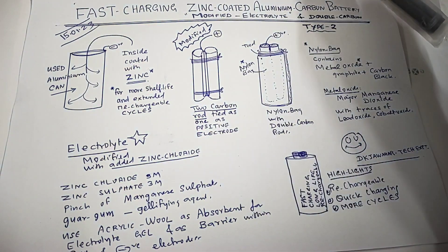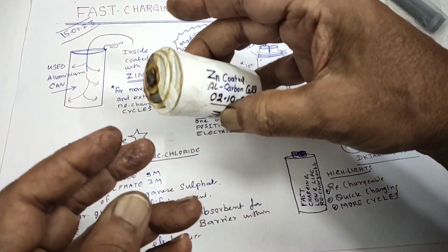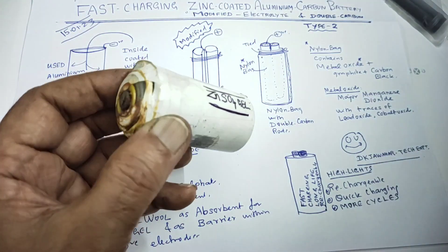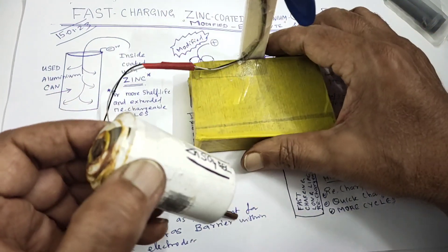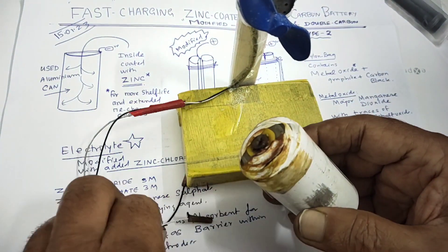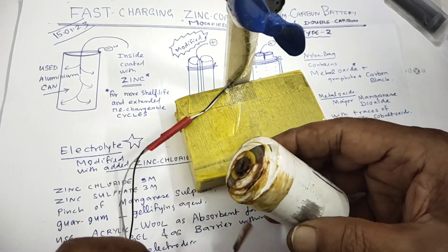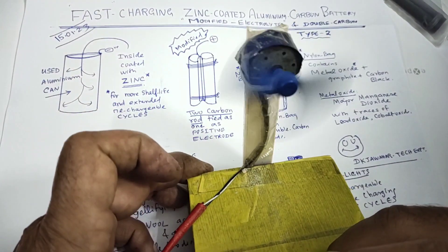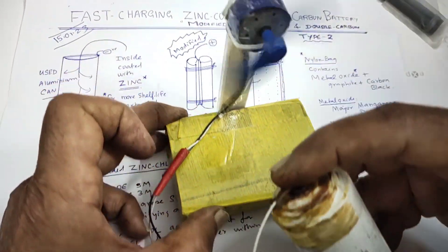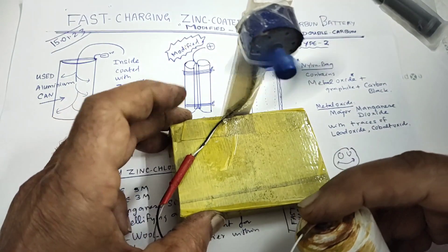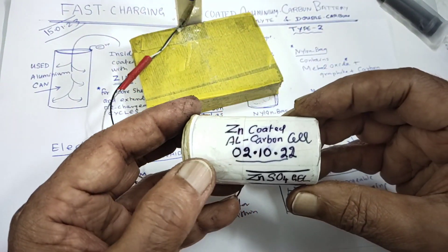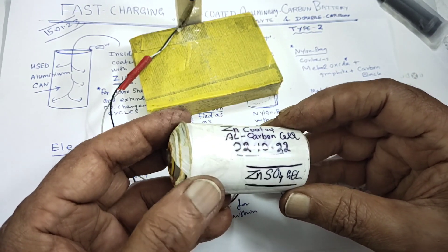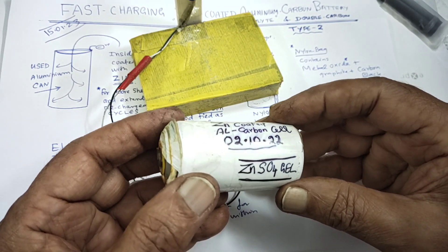Friends, for your information this same zinc coated aluminum battery was prepared on 210 still running. Just for your information showing because they are all fast charging and more shelf life. Though it is aluminum can since it is coated with zinc, you can able to see, 210 has done it, but still it is able to maintain as if it is new. If I charge it comes to 2.1 volt ampere exceeding 300 milliampere.